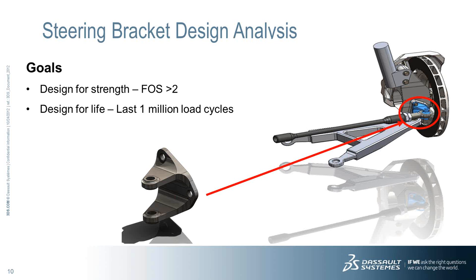So let's see how SOLIDWORKS can tackle this problem. We'll do a simple analysis on a part — a steering arm bracket from a car front suspension. We have two goals: we want a factor of safety of two to ensure the part is strong enough, and we want the component to last one million load cycles, where a load cycle is the car going from opposite lock to opposite lock — basically one million corners throughout its service life.